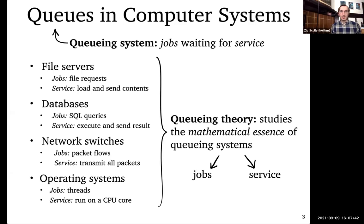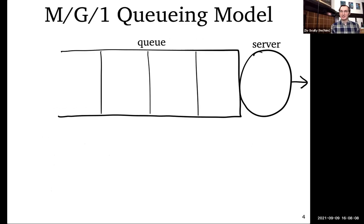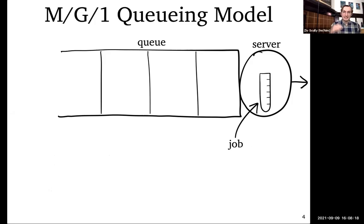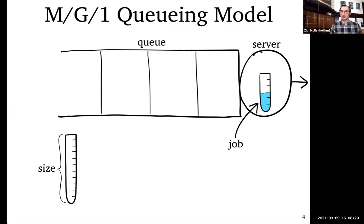I'm going to introduce one mathematical model of queuing systems called the MG1 queue — essentially baby's first queuing model. It has a single server that can serve one job at a time and a queue that can hold any number of waiting jobs. I'll draw jobs as test tubes — a job's height denotes its size or service requirement, the amount of time needed to complete it. Serving a job means filling the test tube with water.